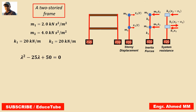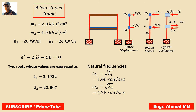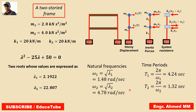We can find the two roots: λ1 and λ2. Since I previously considered λ = ω², the natural frequencies are obtained as ω = √λ. We get ω1 = 1.48 rad/s and ω2 = 4.78 rad/s. We can then find the time periods very easily as T = 2π/ω1 and T = 2π/ω2. So we got the time periods. Let's move to the next slide to use all these values to find our results.